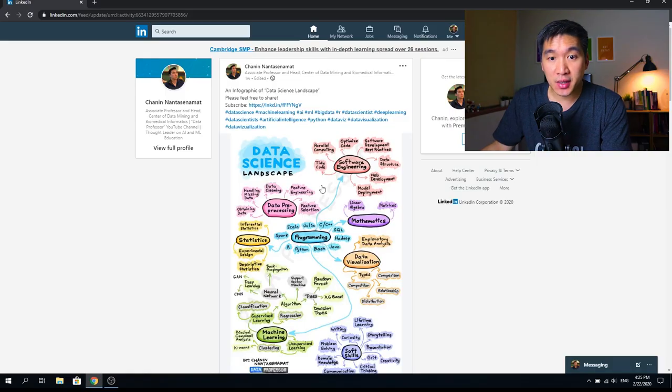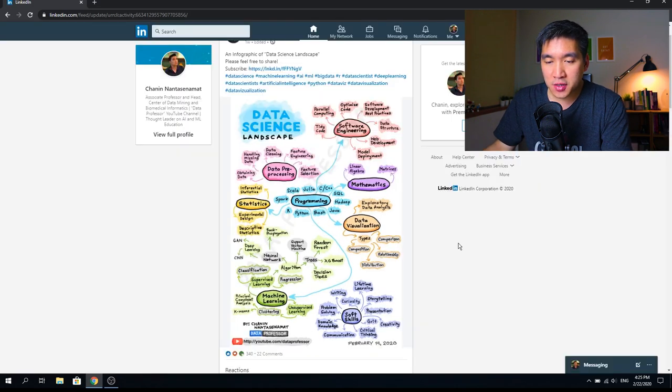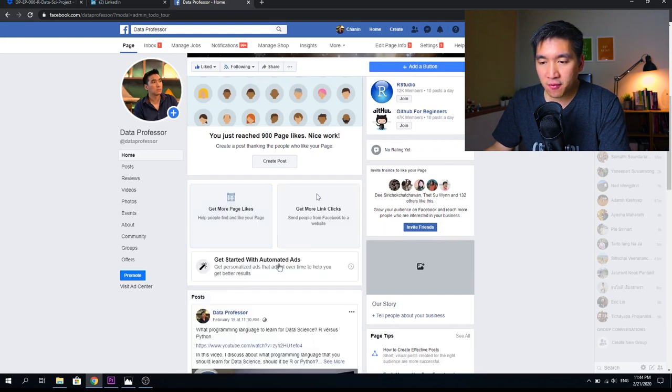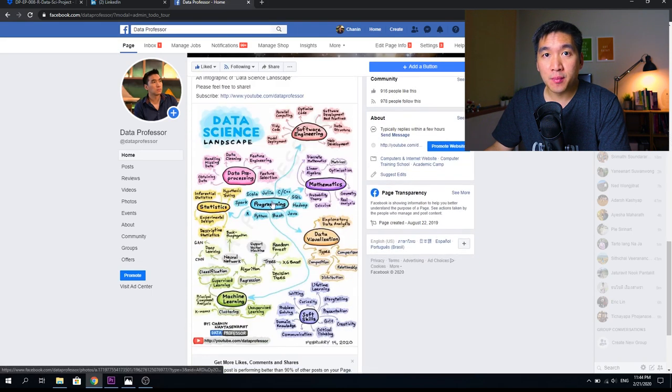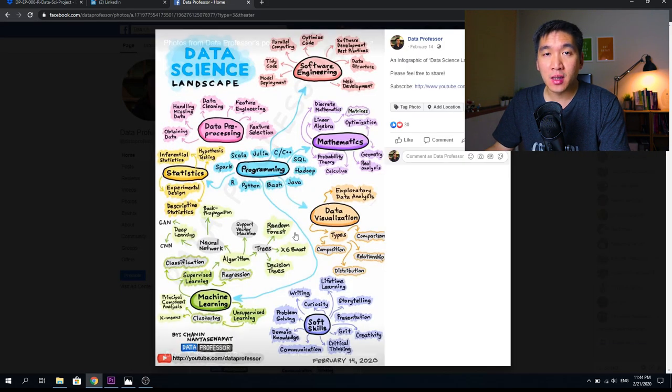I spent a couple of weeks doodling on the iPad an infographic which summarizes some of the key concepts, frameworks, skill sets, and important data science topics you should consider when first starting out or to keep up to date. Let me open up this infographic. As you can see here on LinkedIn, I've shared this data science landscape. Here's a look at the Facebook post. This infographic is meant to be a concise summary or a bird's eye view of the field of data science. To download a copy, please find the link in the description.